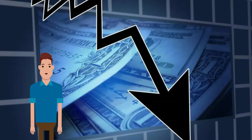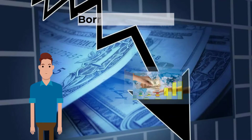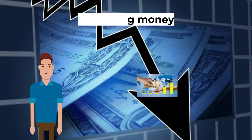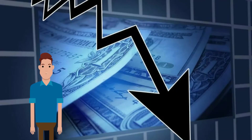Recession in other countries: if a country's main trading partners experience negative economic growth, they will buy less of the country's exports, worsening the current account. Borrowing money: if countries are borrowing from other countries to finance their expenditure and growth, current account deficits will develop.